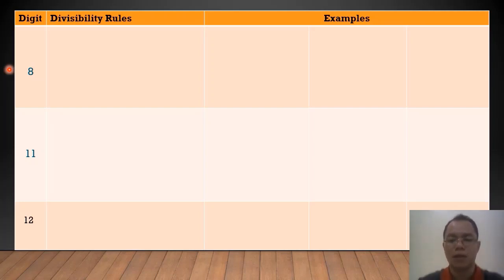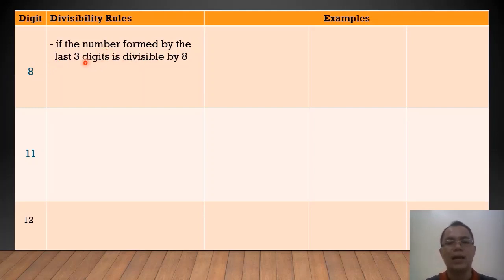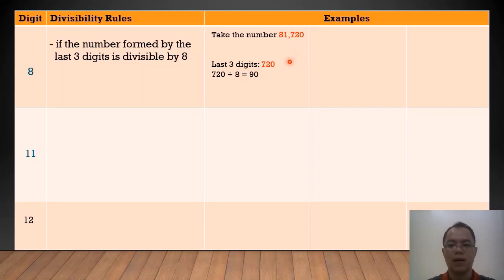When can we say that a number is divisible by 8? The divisibility rule states that a number is divisible by 8 if the number formed by the last 3 digits is divisible by 8. For example, we have 81,720. The last 3 digits formed is 720. 720 divided by 8 equals 90, and 90 is a whole number. Therefore, 81,720 is divisible by 8.